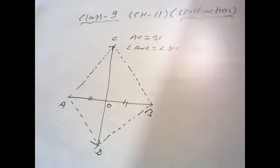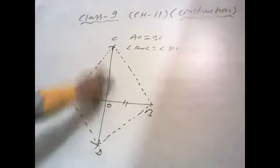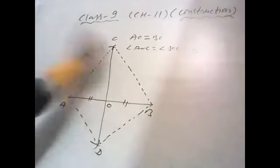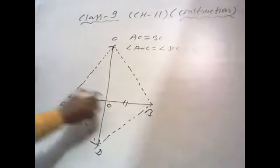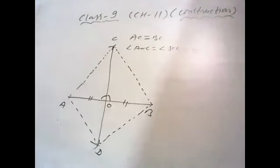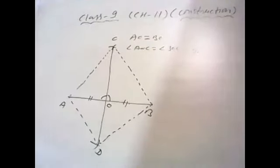So for that, we take these two triangles. If we prove these two triangles, triangle AOC and triangle BOC congruent, so by CPCT AO is equal to BO and this angle is equal to this angle. And these two angles are forming linear pair, so we get angle AOC and BOC equal to 90 degrees. But students, how we prove these two triangles congruent, this is very important.